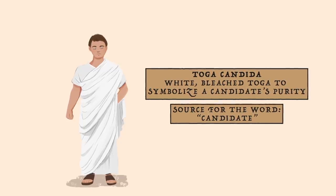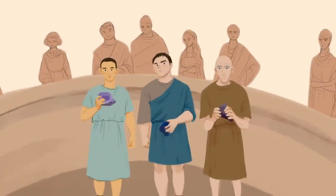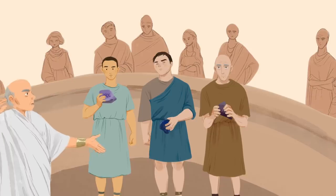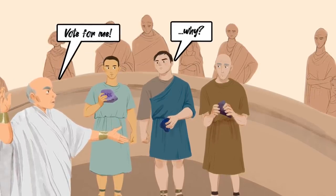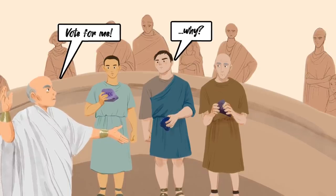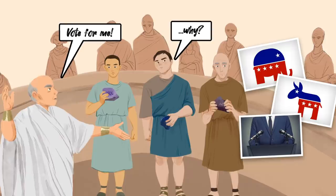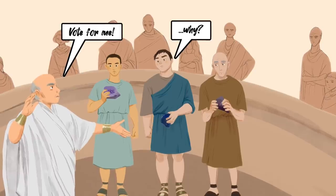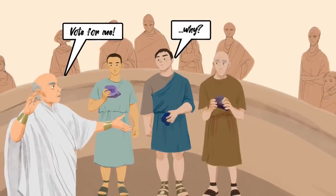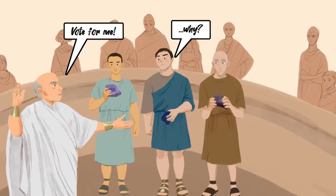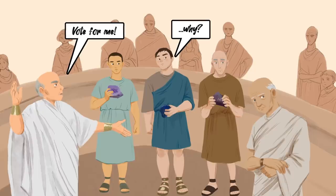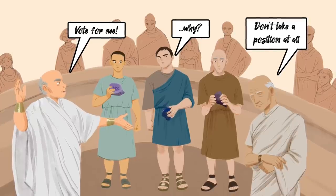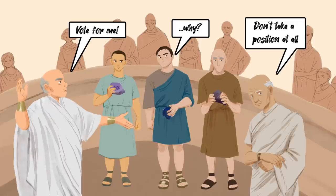Now it's time to run the campaign — basically convincing voters to choose you. In the modern political era, arguments are generally framed by the ideology of a candidate's political party. In the Roman era, things were quite different. There were no organized political parties and no campaign proposals. In fact, Cicero's frank advice to his brother about how to run for election involved not taking a stance on anything so as to irritate as few people as possible.